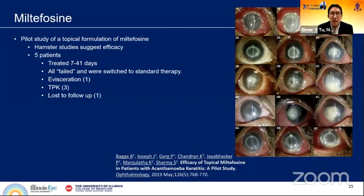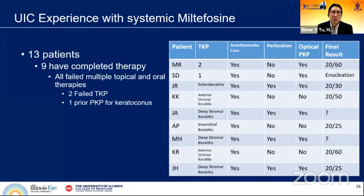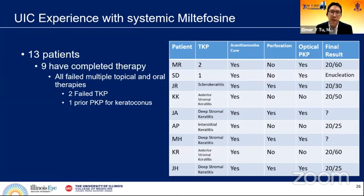Bupesh Bhaga from LV Prasad took that concentration and treated five patients; he felt all patients failed primarily because of increased inflammation — one patient ended up with evisceration, three with therapeutic keratoplasty, and one was lost to follow-up. Our personal experience started in 2011, and generally our results have been pretty good. We did have one patient who had enucleation, but that was because of epithelial downgrowth, not persistence of the organism.